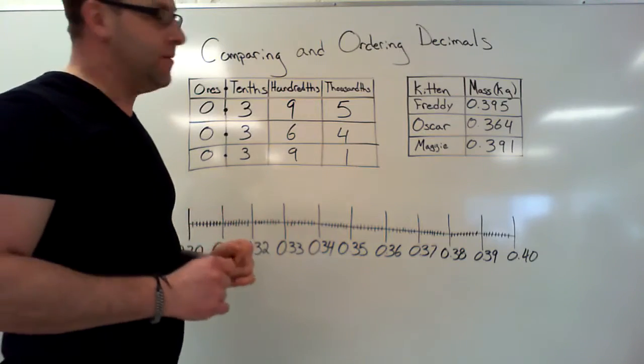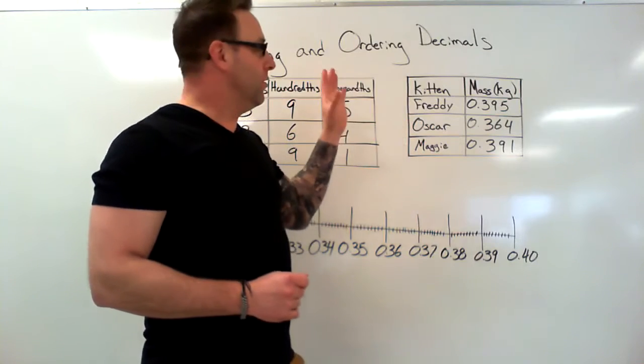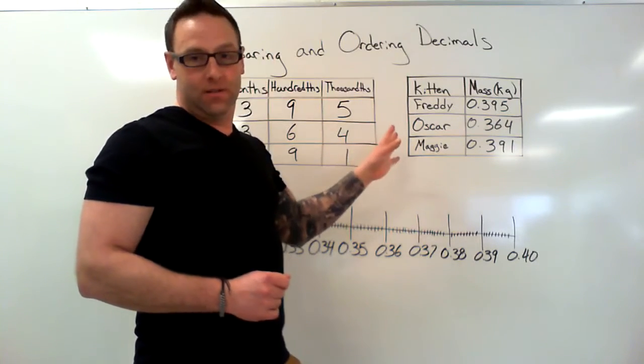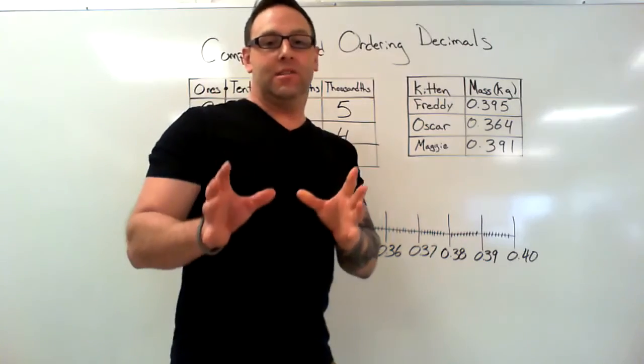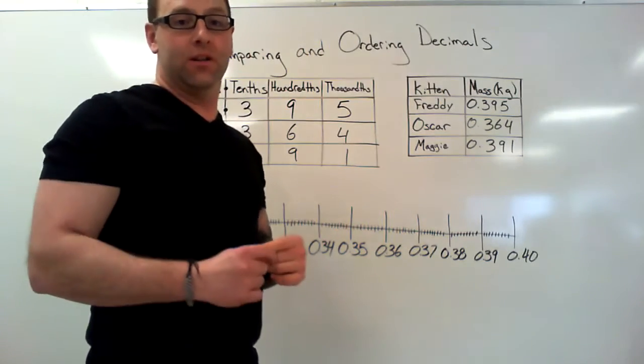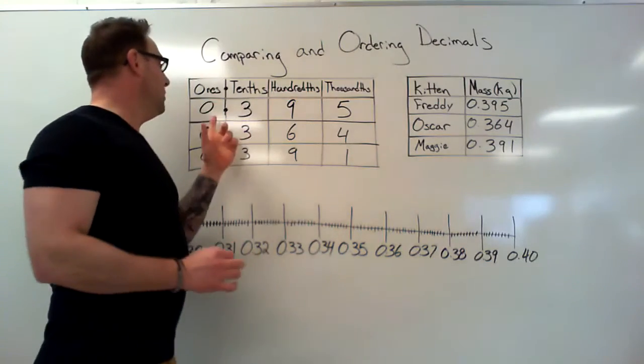Okay, first thing we have here is a chart with the weights of three kittens: Freddie, Oscar, and Maggie. Let's see how these numbers compare to each other using a place value chart.